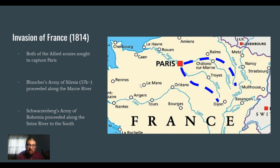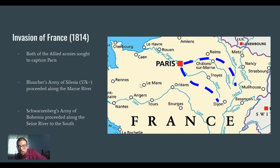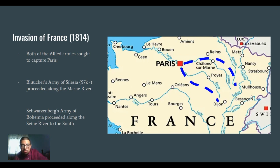Before I get into the actual Six Days Campaign, I have a map with blue dots symbolizing where the fighting took place. Most of it took place between the River Marne and the River Seine. Two main armies were approaching Paris: to the north, you had Blücher's Army of Silesia marching along the Marne; on the south, you had Schwarzenberg's Army of Bohemia proceeding along the Seine River.